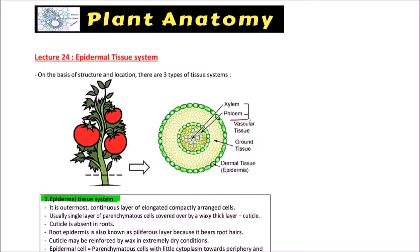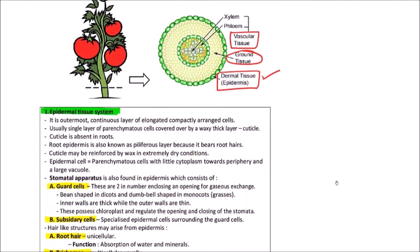First one is vascular tissue system in the center, then in the periphery there is epidermal tissue system, and in between there is ground tissue system. So in this video we are going to discuss the epidermal tissue system.